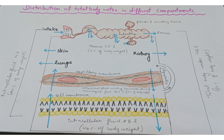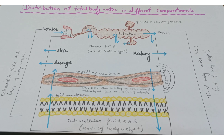In females, the water content is 10 percent less compared to males, comprising 50 percent. Now let's see the different compartments. There are two main compartments: the intracellular fluid compartment and the extracellular fluid compartment. As seen in the diagram, the intracellular fluid compartment comprises 40 percent of body weight and is formed by the bulk of the muscles, while the extracellular fluid compartment is 20 percent.